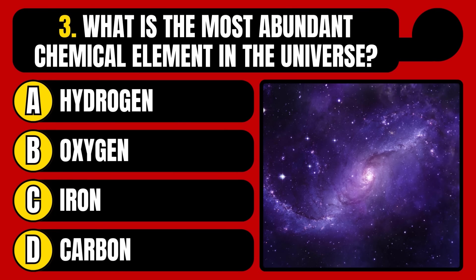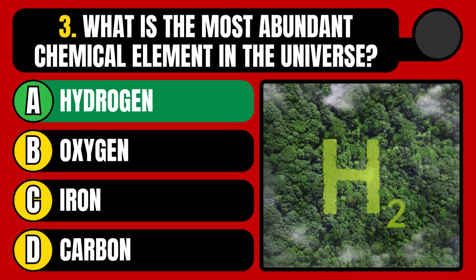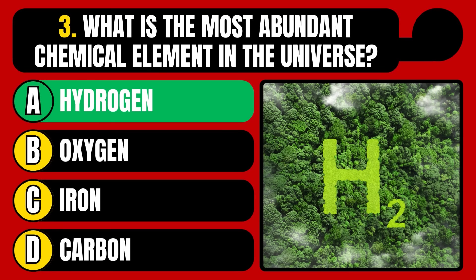What is the most abundant chemical element in the universe? Hydrogen, oxygen, iron, or carbon? The correct answer is option A, hydrogen.